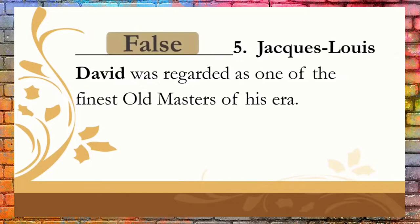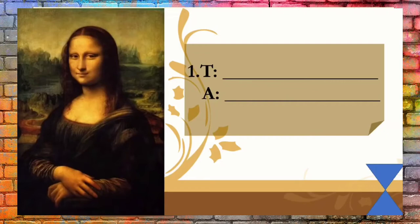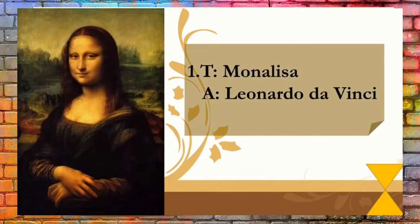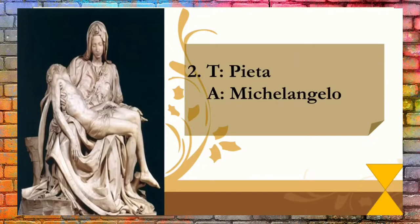Now let's have a review on our previous lesson. Please name the title and artist of the following artworks. What is the title of this artwork and who made it? Very good! This is the Mona Lisa, painted by Leonardo da Vinci. What is the title of this artwork and who made it? Good job! This is the Pietà, sculpted by Michelangelo Buonarroti.